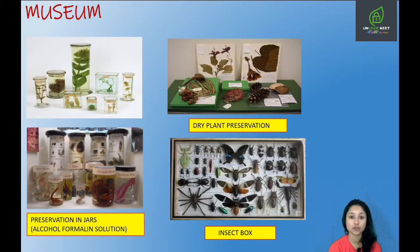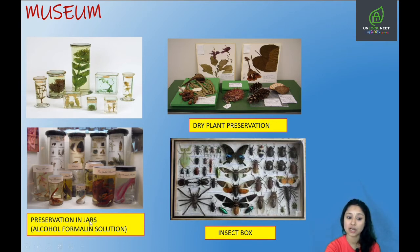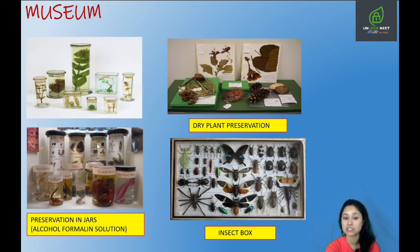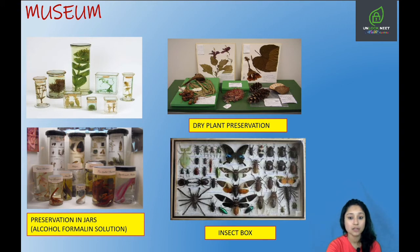A museum is a collection of both preserved plants and animals. Preservation can be done in various ways. Organisms can be preserved in jars using a preservative solution such as alcohol formalin — you can see jars with preservative solutions containing preserved plant and animal specimens. Plants that cannot be stored in herbarium, like gymnosperms and algae which have bulky structures like cones and seeds, can be stored here in the museum.